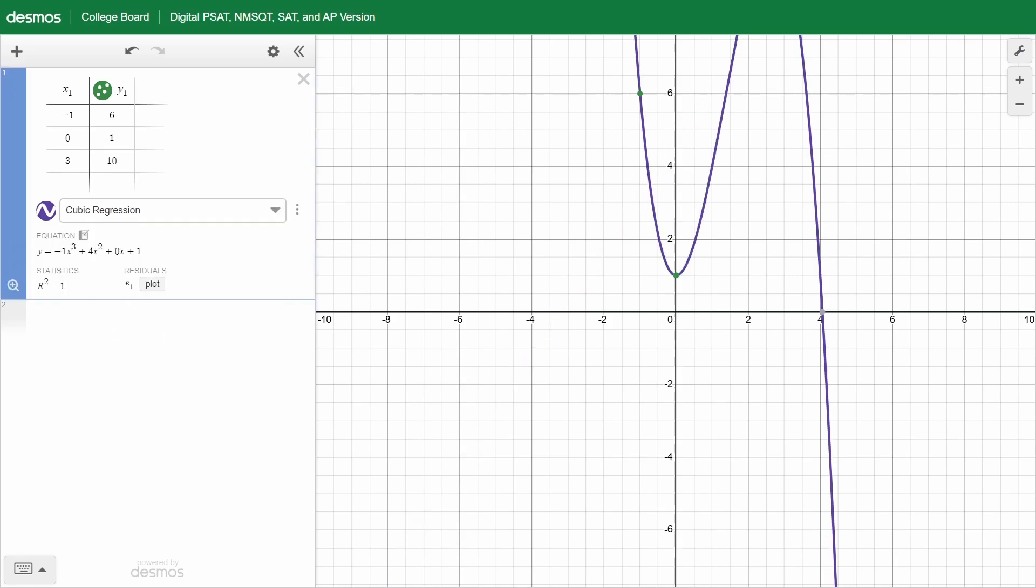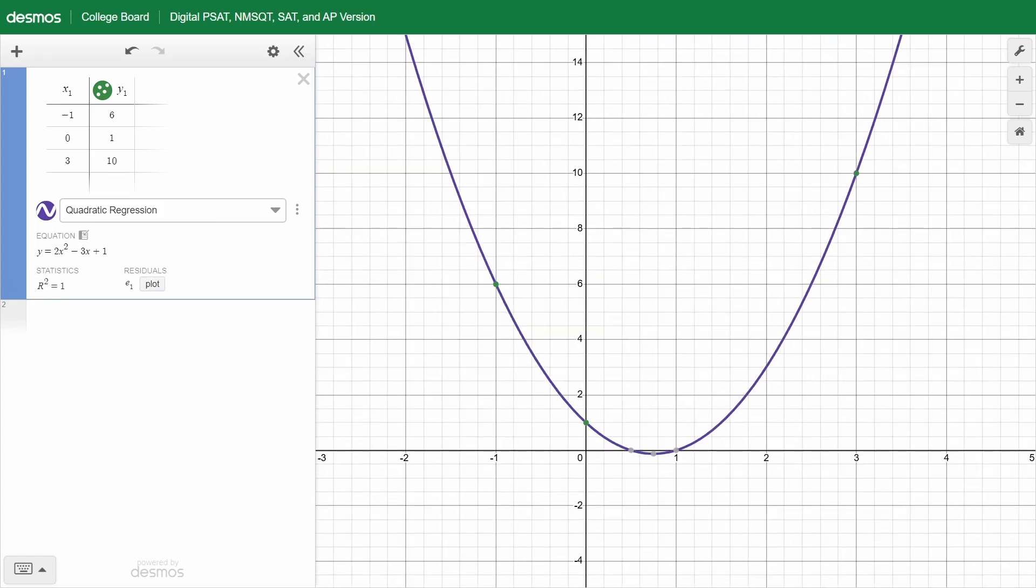So here I picked a cubic. But really this question was asking us about a quadratic. So let's click on quadratic regression. And how about we click on this little magnifying glass to zoom fit our data. And we can see these three data points. The function goes perfectly through it. So we did a good job.